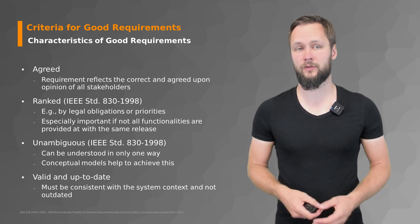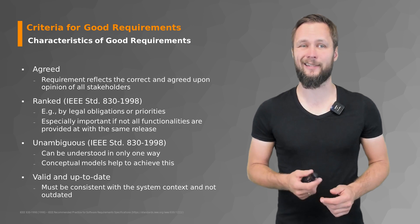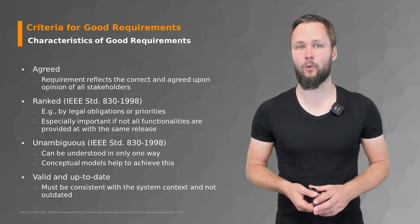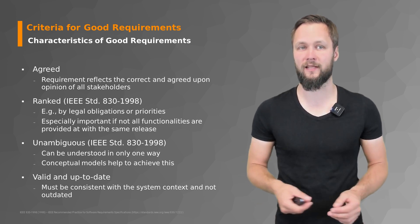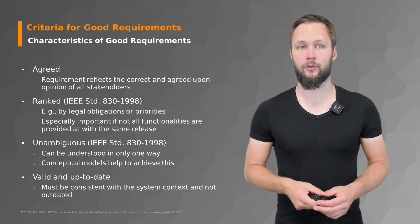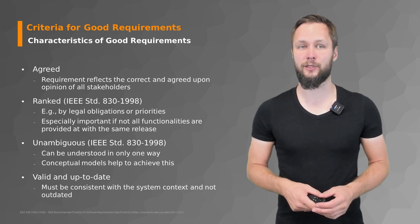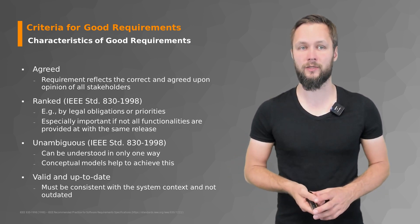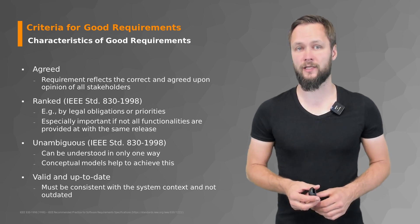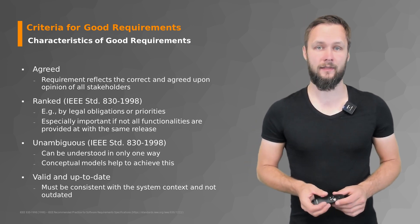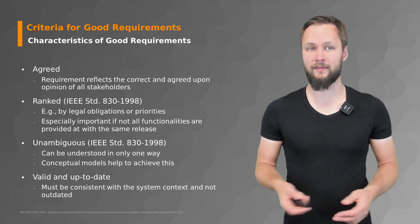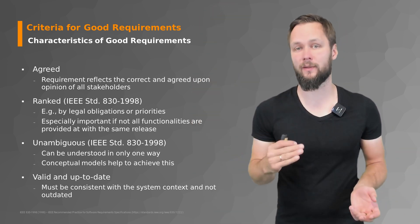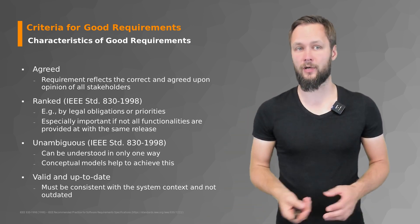The first characteristic that is very important is 'agreed upon.' Requirements reflect the correct and agreed upon opinion of all stakeholders, so no conflicts remain. The IEEE standard also suggests requirements be ranked, for example by legal obligations or priorities. This is especially important if not all functionalities are provided with the same release, or when you have budget constraints — which requirements really need to be fulfilled and which are optional.